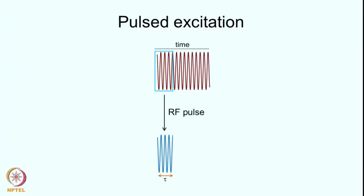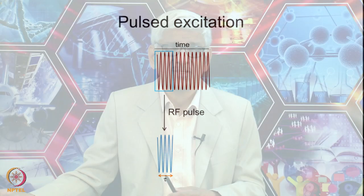So there is a new strategy: instead of sweeping the field, keep the field constant and apply all the frequencies in one go — generate so many frequencies simultaneously so that one or another matches the resonance condition and you achieve excitation of all the spins at once. This is termed pulse excitation.